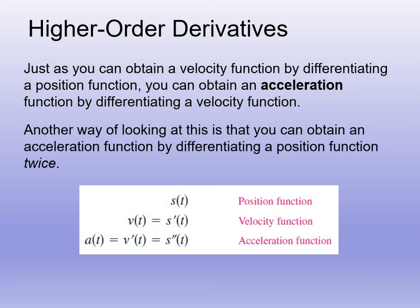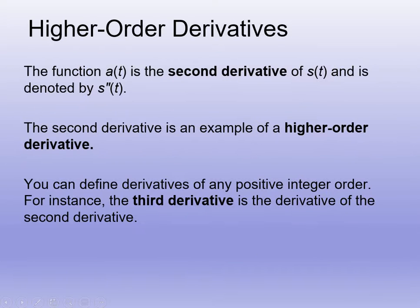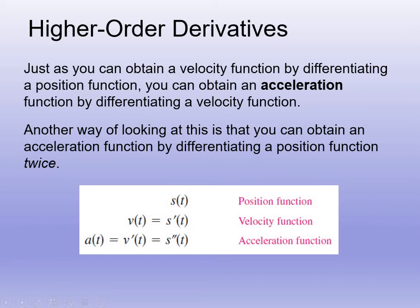For a lot of the stuff we've talked about, I've been giving you a position function and then we've been taking the first derivative, and that actually tells us what velocity is. So position is s of t, and the velocity is going to be s prime of t. We can always write s prime of t as v of t.